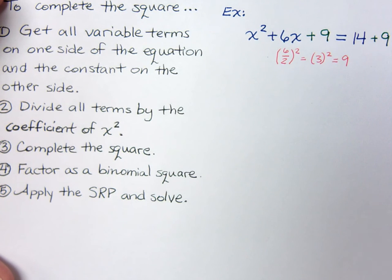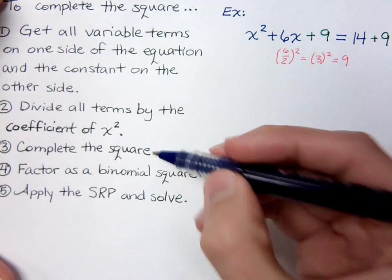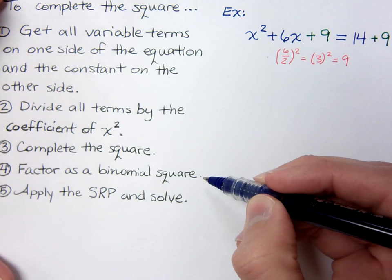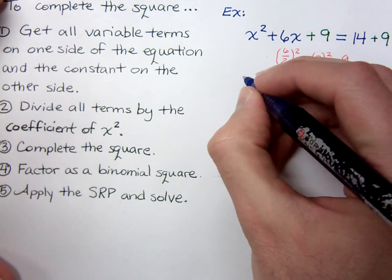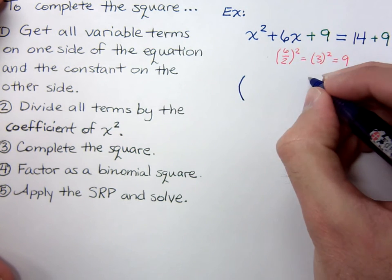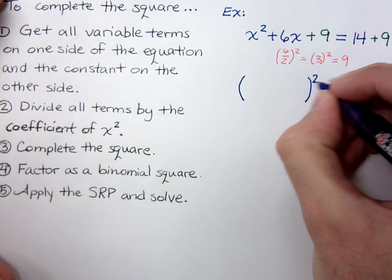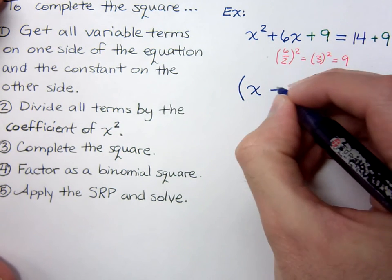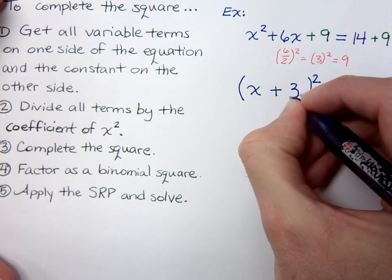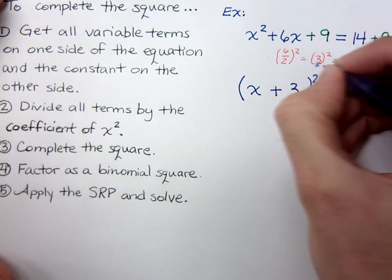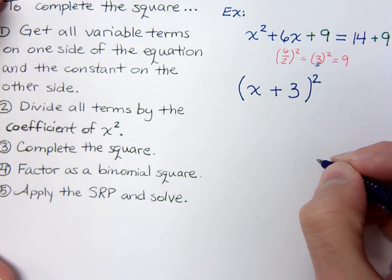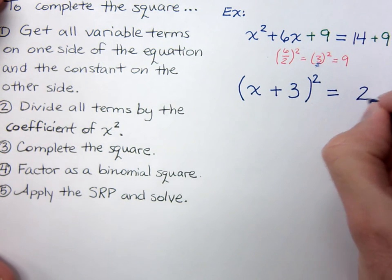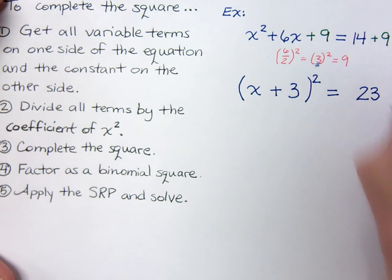The reason I added nine and completed the square was so that I could factor the left side as a binomial square. It was all about taking things of this form and factoring it as a binomial square. This will factor as x plus three — I'm getting the three from this piece right there, the number you get before you square — and this is going to equal positive twenty-three.